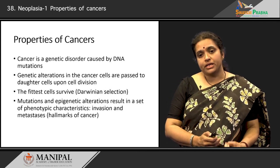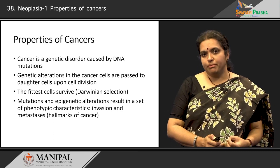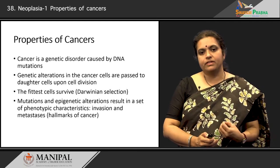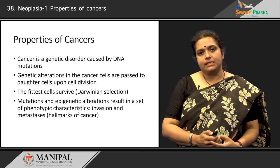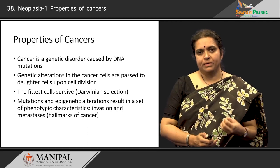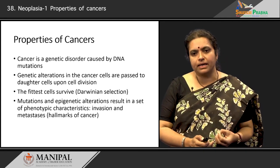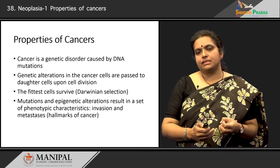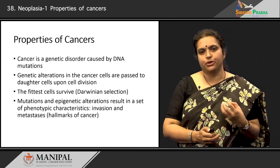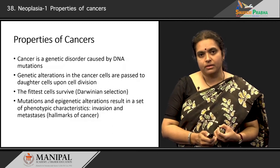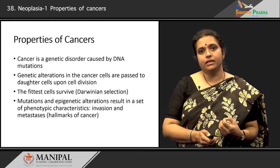The third point is that when these genetic mutations are passed on, the fittest cells which get the most beneficial mutations survive — this is some kind of Darwinian selection that occurs within cancer cells. The last point is that mutations and epigenetic alterations give rise to a set of phenotypic characteristics which make the cancer cell what it is: a cell that can invade and metastasise to distant parts of the body. These are all the hallmarks of cancer, and taken together they make cancer almost like a whole organism in itself — it can grow independently, move within the human body, and ultimately lead to the death of the patient.